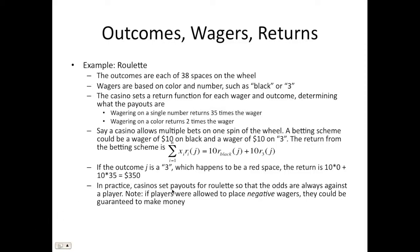A side note on roulette: casinos set payout rates so their odds are always fixed against the player. They give a payout less than the true odds of winning, because spaces zero and double-zero don't pay out even though the odds are set as if they didn't exist. This will play into the arbitrage discussion — if you were allowed to make negative wagers (bet against things happening), you could guarantee yourself profit by betting against certain outcomes, since the odds are stacked against the player.